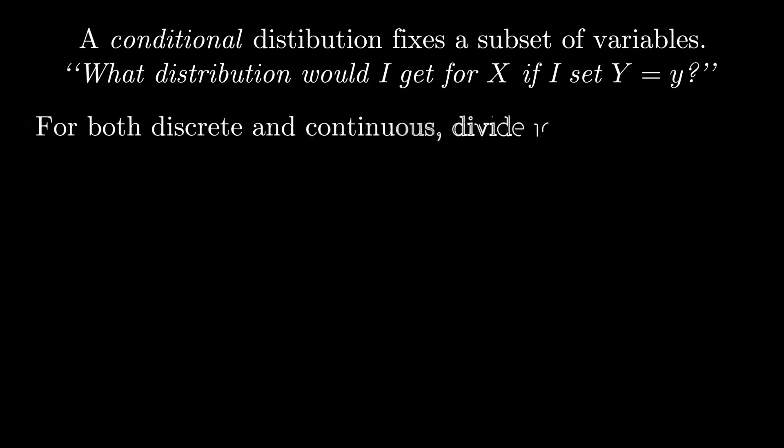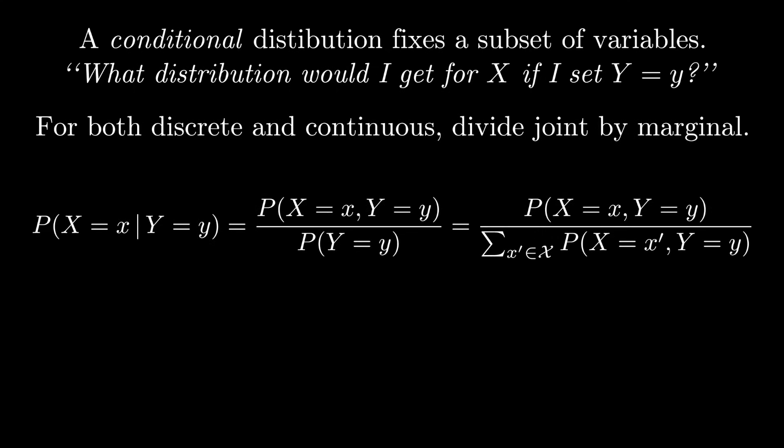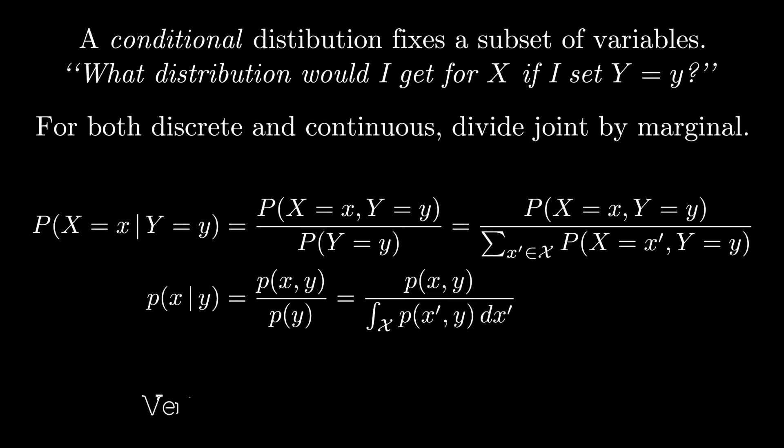For both discrete and continuous variables, we get the conditional distribution by dividing the joint distribution by the relevant marginal. The only difference is whether we sum or integrate in order to compute that marginal. When we talk about conditional distributions, we say something like probability of x given y, and we use a vertical bar to denote that.